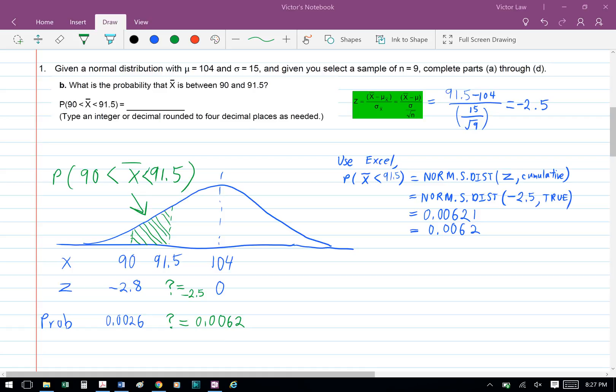Next, we're going to use Excel to help us solve for the probability that x bar is less than 91.5. We're going to use the NORM.S.DIST function and substitute negative 2.5 for the z. For cumulative, we're going to put true, and we get 0.00621.